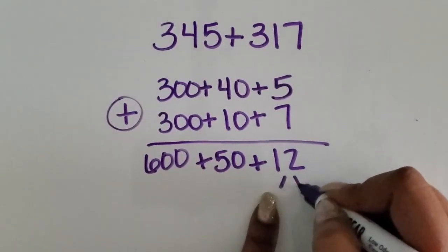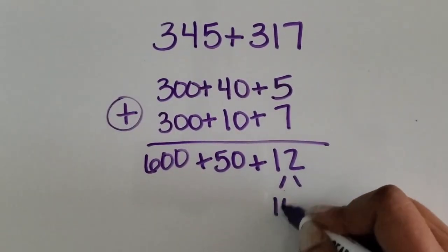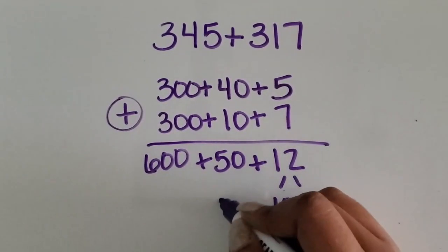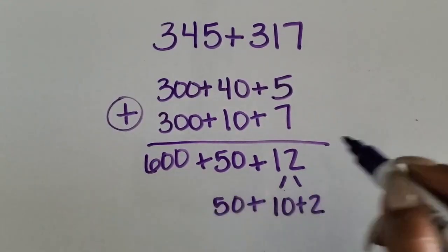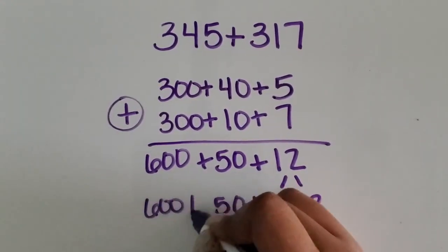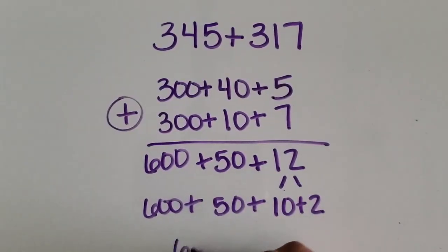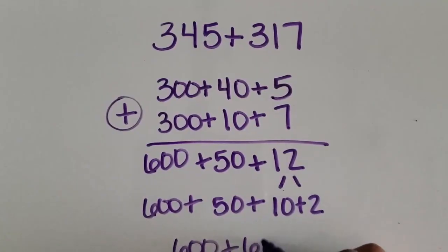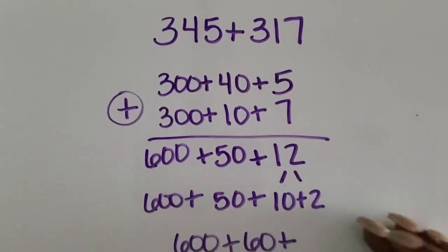Now I want to expand the twelve into ten and two. Bring down the fifty and bring down the six hundred. Six hundred plus fifty plus ten is sixty plus two.